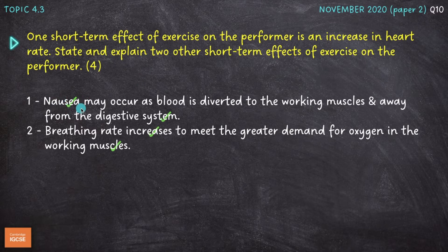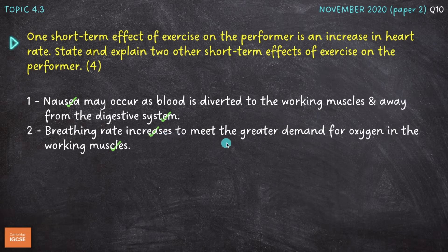Nausea, which is an inclination to vomit or feeling sick, may occur as blood is diverted to the working muscles, where the demand for oxygen is higher, and away from the digestive system. The breathing rate increases to meet the greater demand for oxygen in the working muscles. When we start to exercise, we require more oxygen in the muscles to produce the energy we need, so our breathing rate goes up to take in more oxygen from the atmosphere via the alveoli in the lungs.